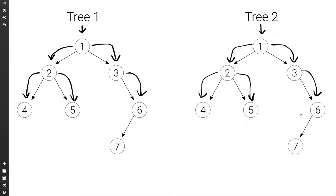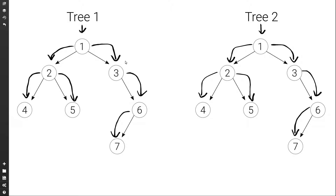Again, the root nodes are equal in value, so we would move to check the left subtree. In both cases there is no left subtree, so they are equal. Then we move to the right — the root values are equal. We move to the left; the values of the root nodes are equal. We move to the left — there is nothing there in both cases. Then we move to the right — there is nothing. So these two subtrees are equal. Then the 6 would try to check the right subtree but there's nothing there in both cases, so we would return true, and this would go all the way up to the 1, and once it verified that the right subtrees are equal we would return true to indicate that these two trees are equal.